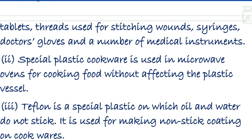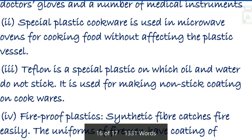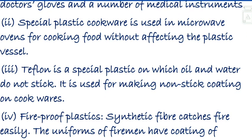Special plastic cookware is used in microwaves for cooking food without being damaged by heat, because plastic is a poor conductor of heat so the heat does not transfer and cause damage. Teflon is a special plastic on which oil and water do not stick. It is used in non-stick coatings for cookware like fry pans and non-stick vessels.